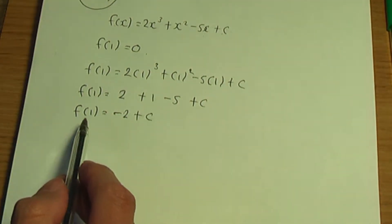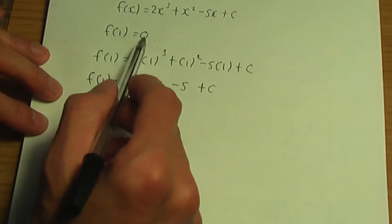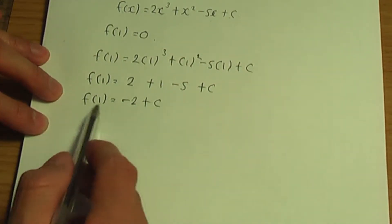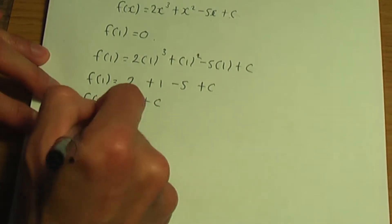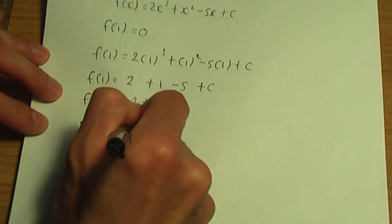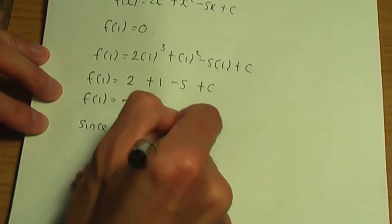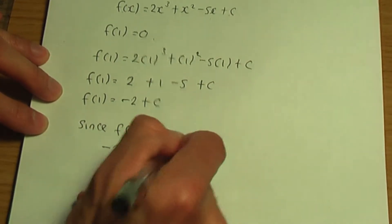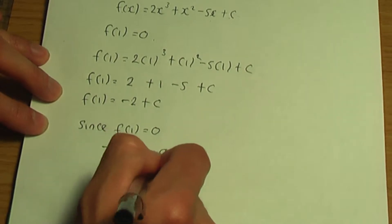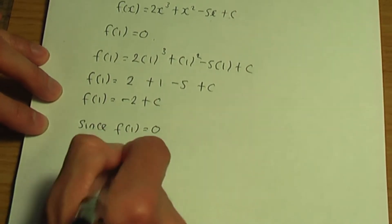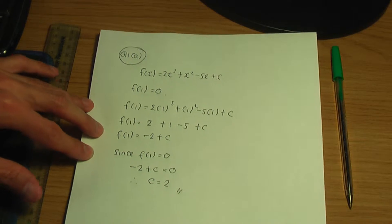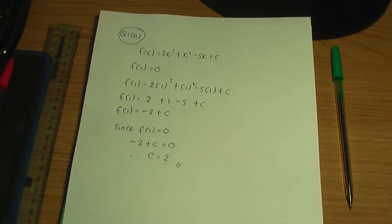So this is f of 1 simplified to the maximum. Now, f of 1 we've been given is equal to 0. So if we equate to 0, that implies minus 2 plus c is 0. So when I rearrange, c is equal to 2. So that should be the answer to part A.